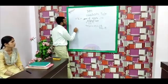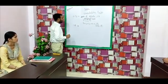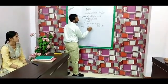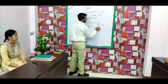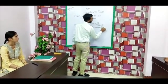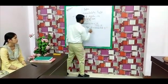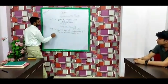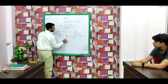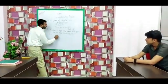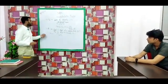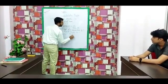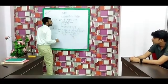Now coming to the divisibility rule of 4. The last 2 digits of a number — if the last 2 digits are divisible by 4, then the number must be divisible by 4. For instance, take the number 1728. Here we clearly see the last 2 digits are 28. You know the table of 4 — 28 is divided by 4, so 1728 is also divisible by 4.